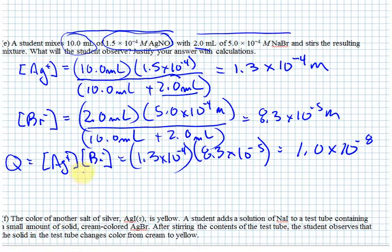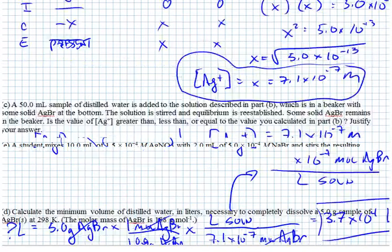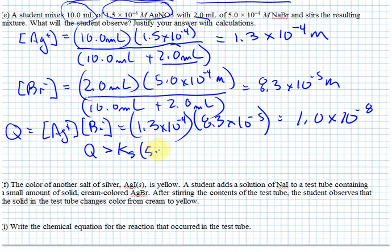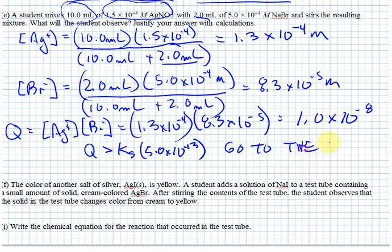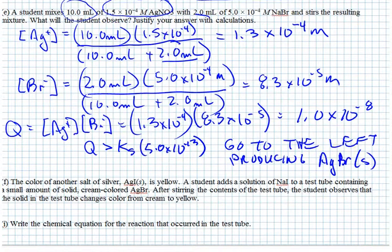We compare Q to Ksp. Q equals 1.0×10⁻⁸ is greater than Ksp, which is 5.0×10⁻¹³. The fact that Q is greater than Ksp tells us that a precipitate will form — the reaction goes to the left, producing solid silver bromide. A precipitate will occur: you will observe a cream-colored precipitate.